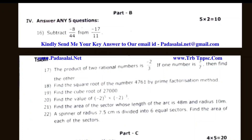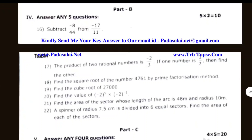Subtract minus 8 divided by 44 from minus 17 divided by 11. Then find the product of the two original numbers. Find the square root of the number, find the cube root, find the value, and find the area of the sector.